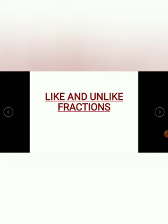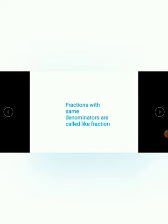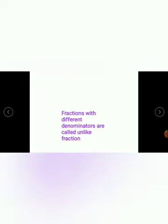Today we can discuss like and unlike fractions — what they are, and also comparison of like and unlike fractions. Fractions with same denominators are called like fractions. When all the denominators in the given fractions are same, we say those fractions are like fractions. Fractions with different denominators are called unlike fractions. So like fractions means the denominators will be same, whereas in unlike fractions the denominators will be different.